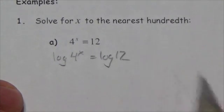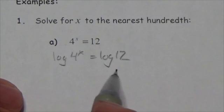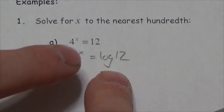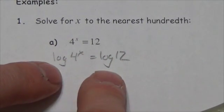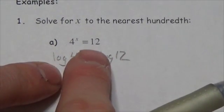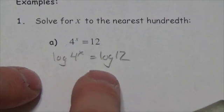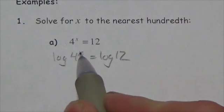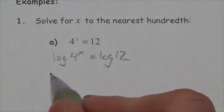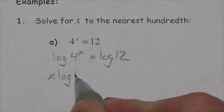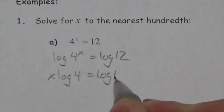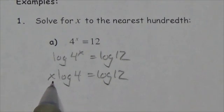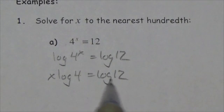As long as you do it to both sides — whether you use a common log or a natural log — it doesn't matter. As long as you take the logarithm of both sides of the equation, the equality stays. So the log of 4 to the x is going to equal the log of 12. That allows me to bring that x down because of the power rule — I can take that exponent and write it out front. So this becomes x times the log of 4 equals the log of 12.